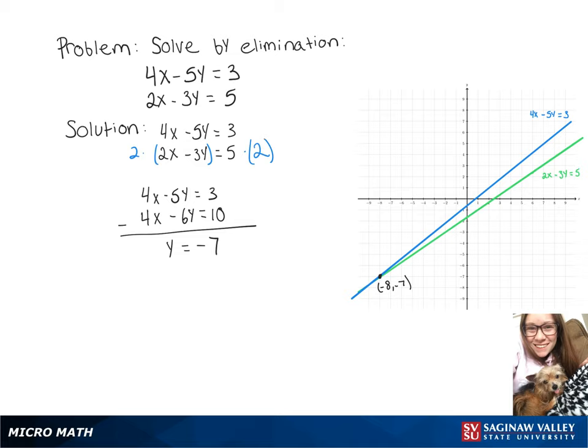sub it back into our second equation, and we've got 2x minus 3 times negative 7 equals 5. And then 2x plus 21 equals 5.